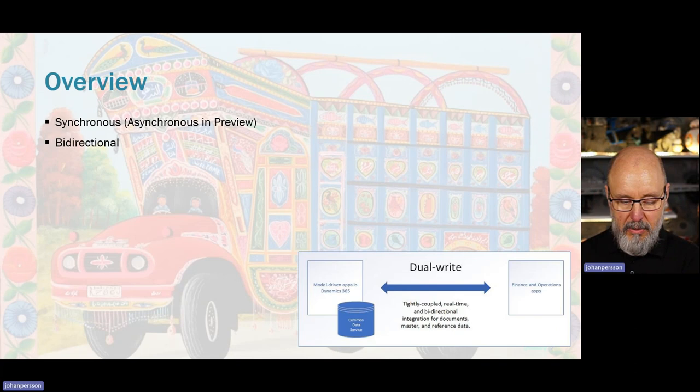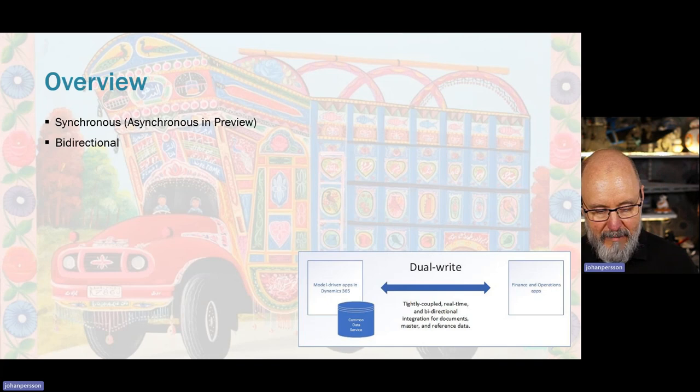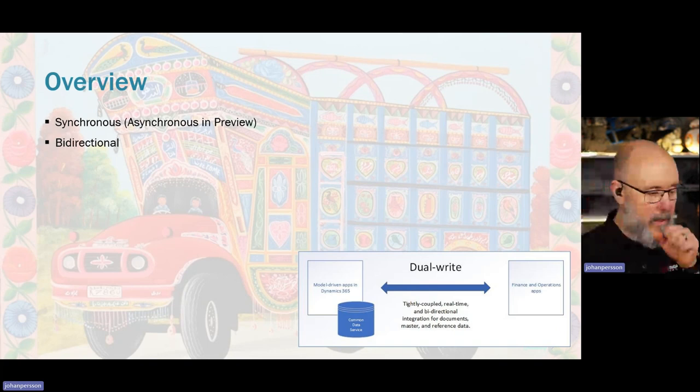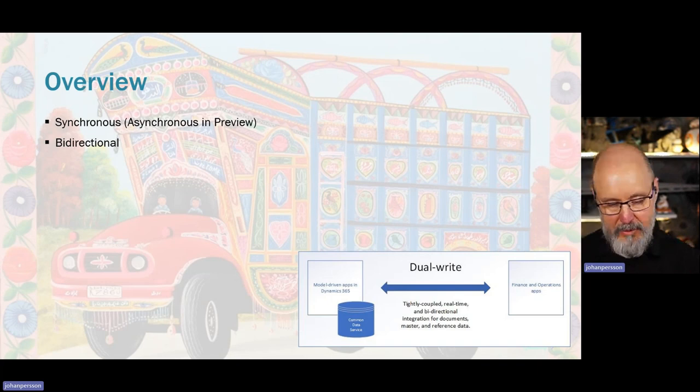That synchronous nature creates a couple of challenges — we can't do a change on one application if it's not accepted on the other. On the other hand, that's good because we won't have corrupted data. It is also bi-directional, meaning we can do a change on either platform and it will synchronize over to the other one.